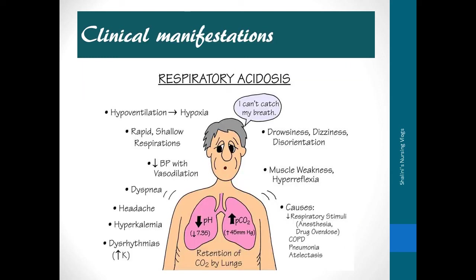Clinical manifestations of respiratory acidosis include: hypoventilation leading to hypoxia, rapid shallow respirations, reduced blood pressure, dyspnea, headache, hyperkalemia, dysrhythmias, drowsiness, dizziness, disorientation, muscle weakness, and hyperreflexia. Manifestations also depend on the primary cause. Always remember pH decreases and pCO2 increases, indicating retention of carbon dioxide inside the lungs.